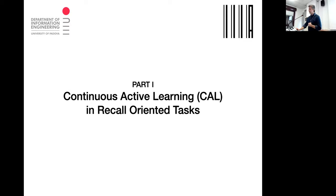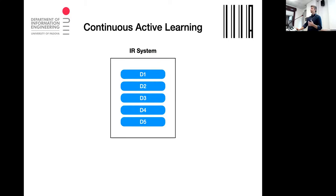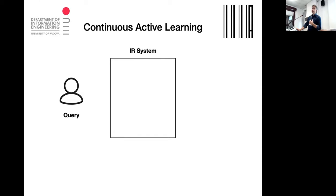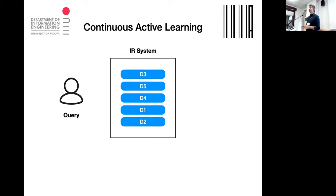What is continuous active learning? This is a sketch of how things work — not exactly the same for every researcher, but this is the main idea. We have a collection of documents, a user with a query (e.g., low back pain), then an IR system ranks these documents, which is different from a standard 1-2-3-4-5 ranking.